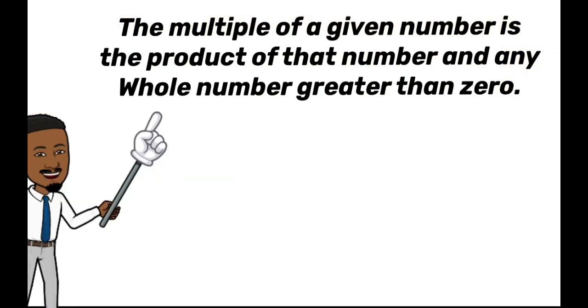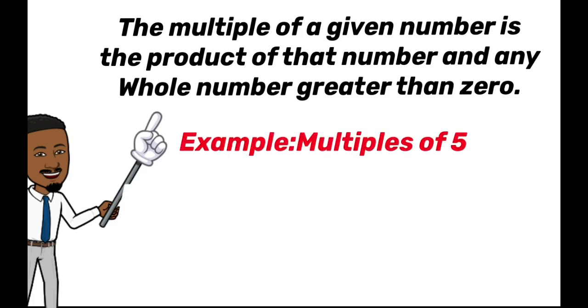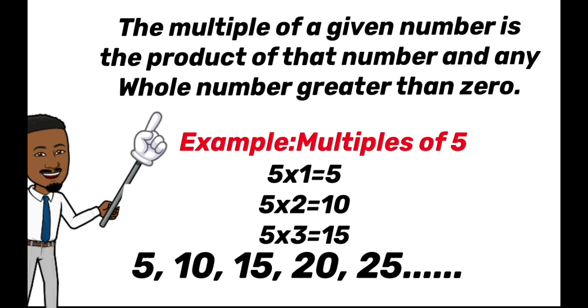The multiple of a given number is the product of that number and any whole number greater than zero. For example, the multiples of 5 would be 5 times 1. 5 would be the first multiple of 5, followed by 5 times 2, which would be 10. So we have 5, 10, 15. Those are some multiples of 5.